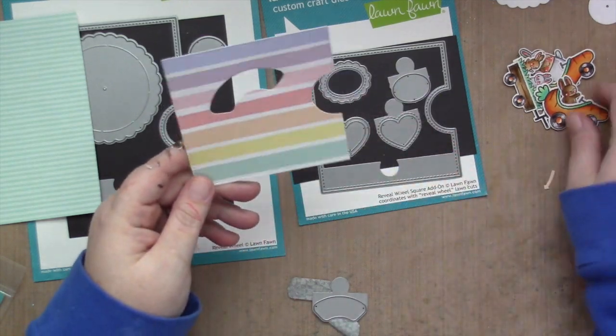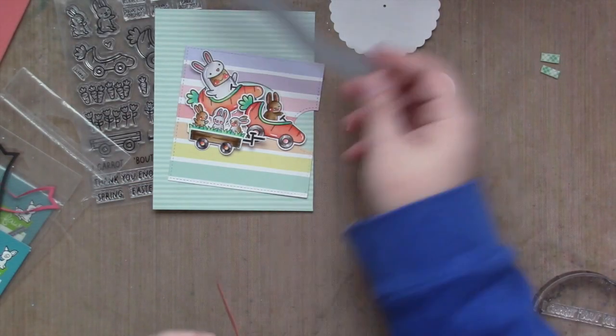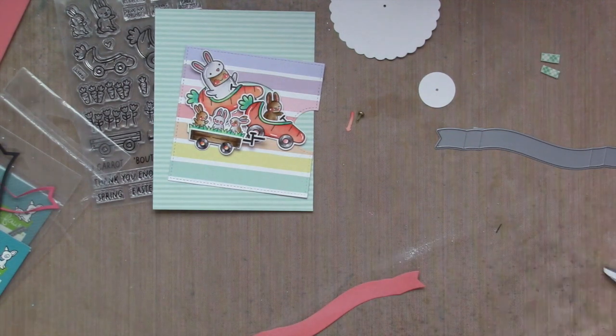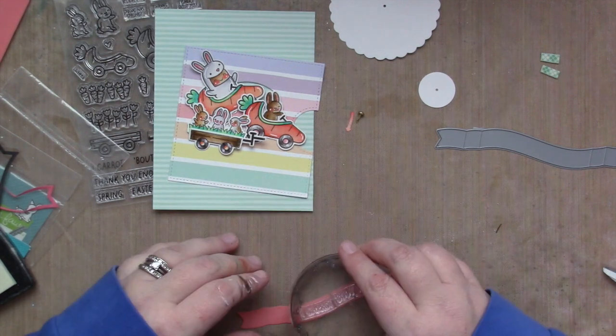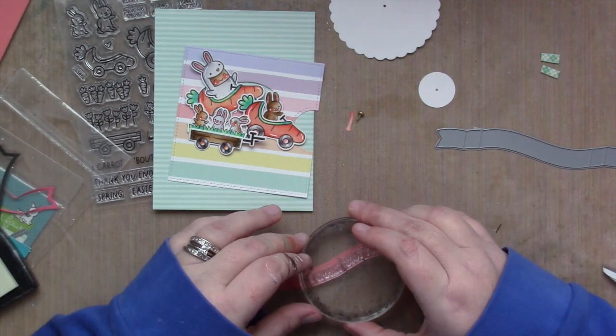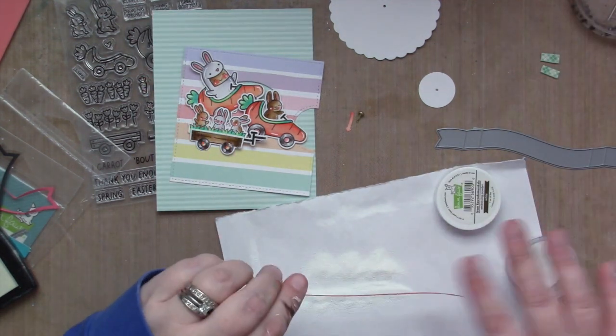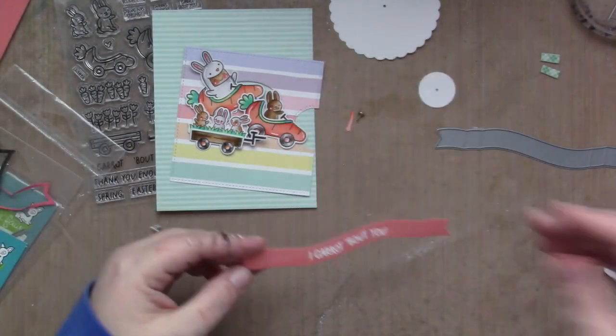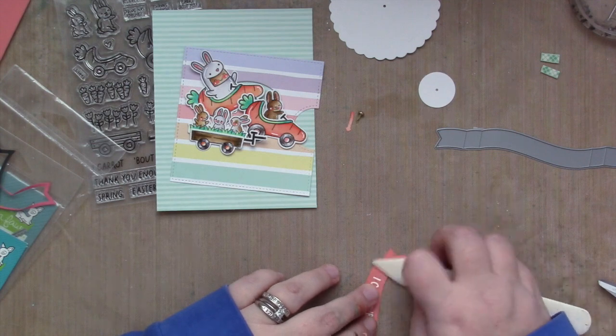And now I'm going to move on to the sentiment. I use the fancy wavy banners to die cut some guava cardstock, and I'm using the 'I care about you' sentiments. I just line them up on my clear block in the wave, and I'm going to heat emboss them in white. And I love how bold that is. I'm just going to use my bone folder to press the edges to give it a nice crisp, clean fold.